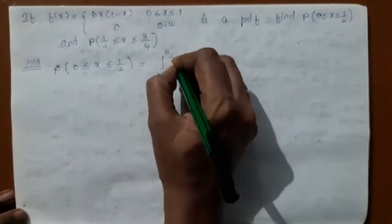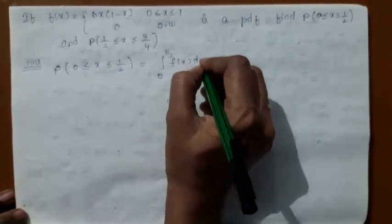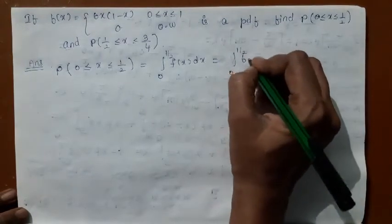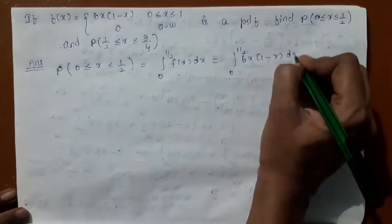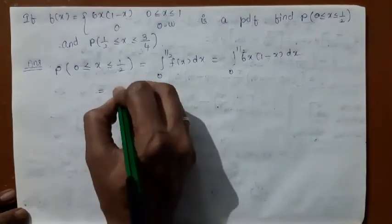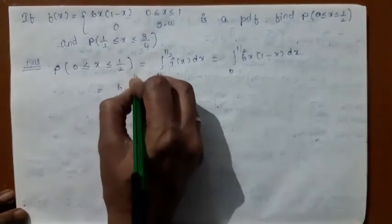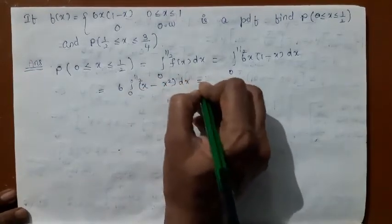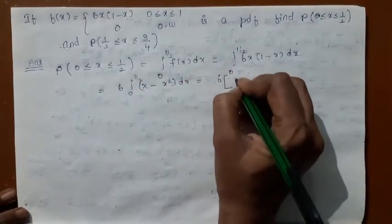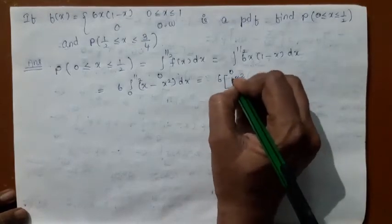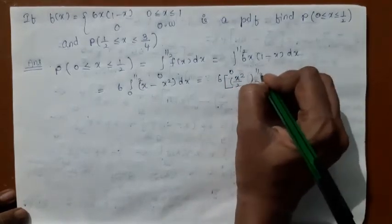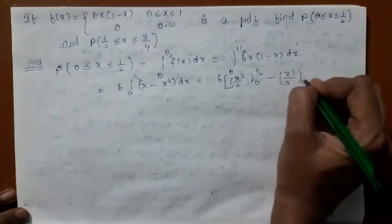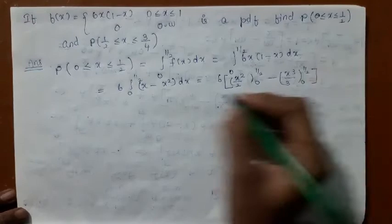So, the integral from 0 to 1/2 of f(x) dx is evaluated. Your f(x) throughout the range is 6x(1 - x). That gives 6 times the integral from 0 to 1/2 of (x - x²) dx. On integration, x gives x²/2 with limit 0 to 1/2, and x² gives x³/3 with limit 0 to 1/2.